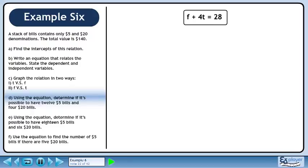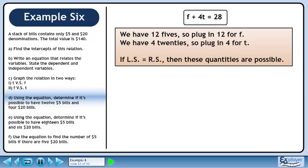In Part D, we'll use the equation to determine if it's possible to have 12 $5 bills and 4 $20 bills. We have 12 $5, so plug in 12 for f. We have 4 $20, so plug in 4 for t.